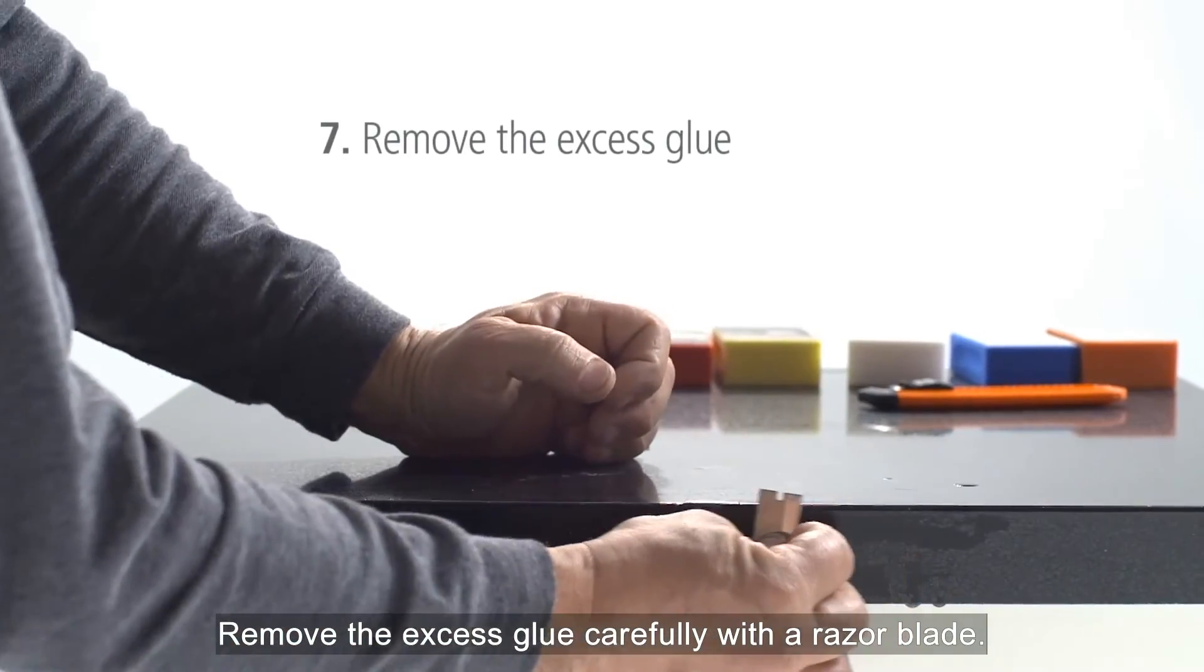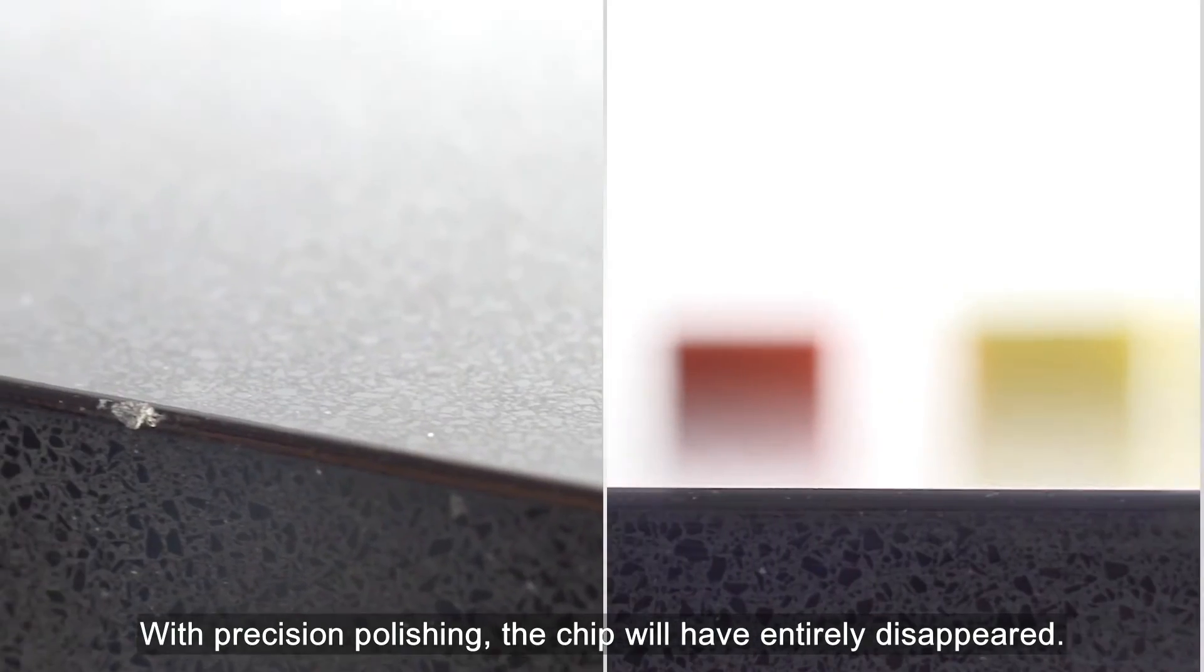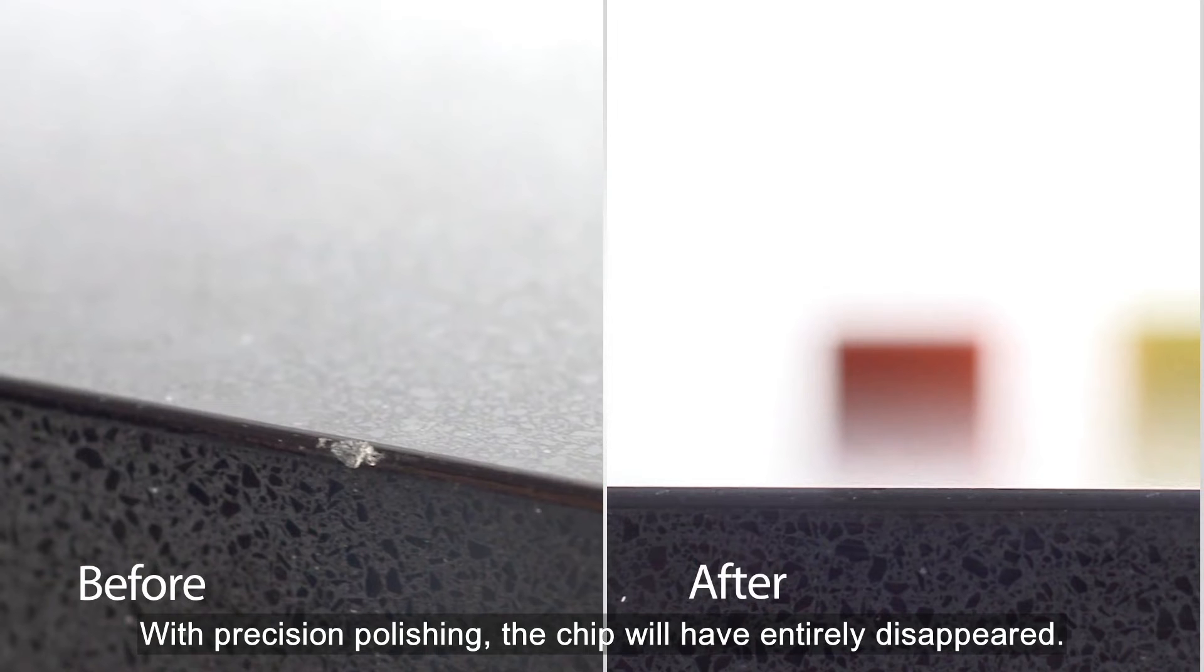Remove the excess glue carefully with a razor blade. With precision polishing, the chip will have entirely disappeared.